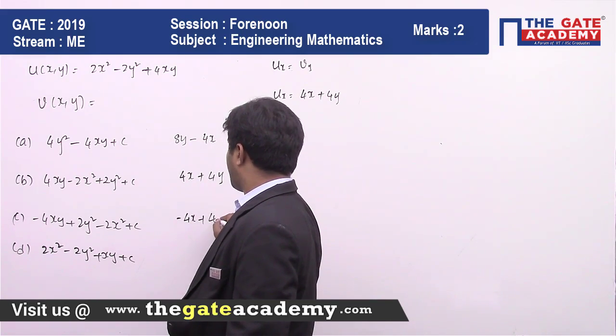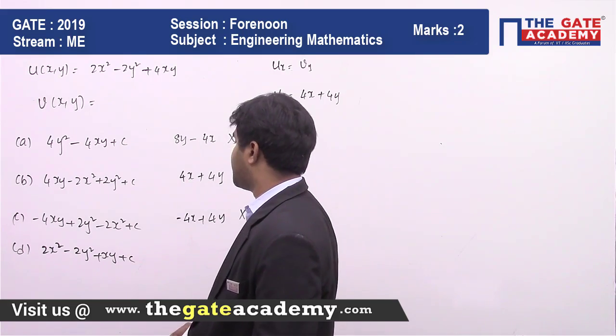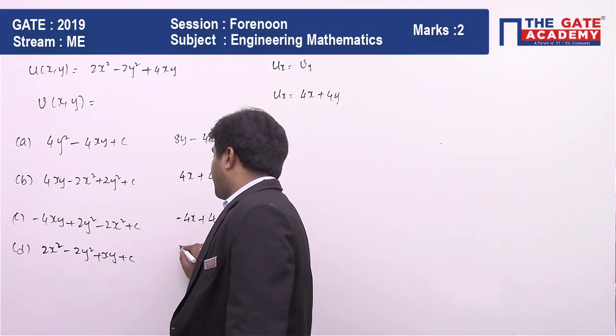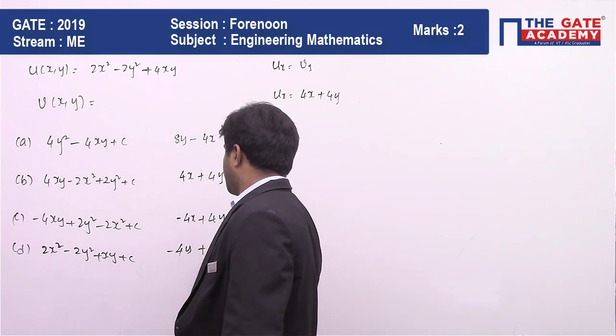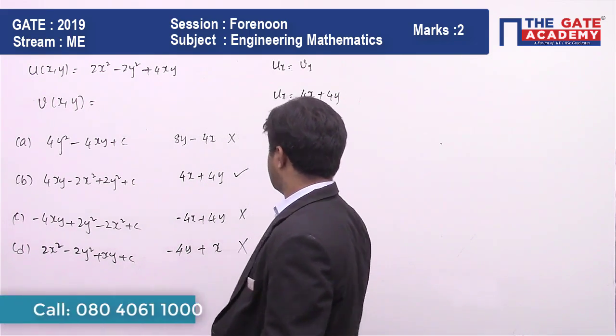Third option with respect to y is going to be -4x + 4y. This is not satisfying. The last one is going to be 4 - 4y + x.